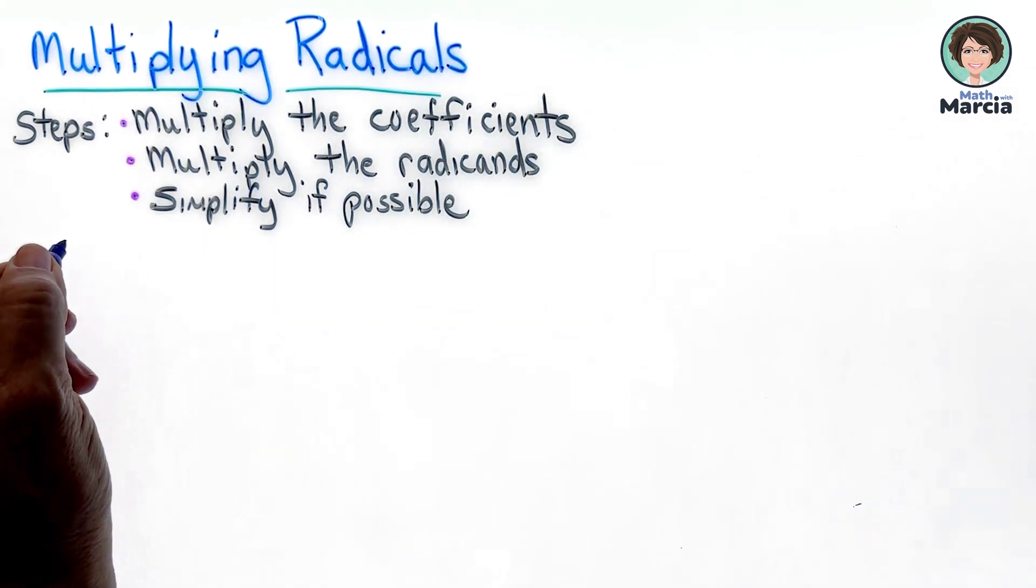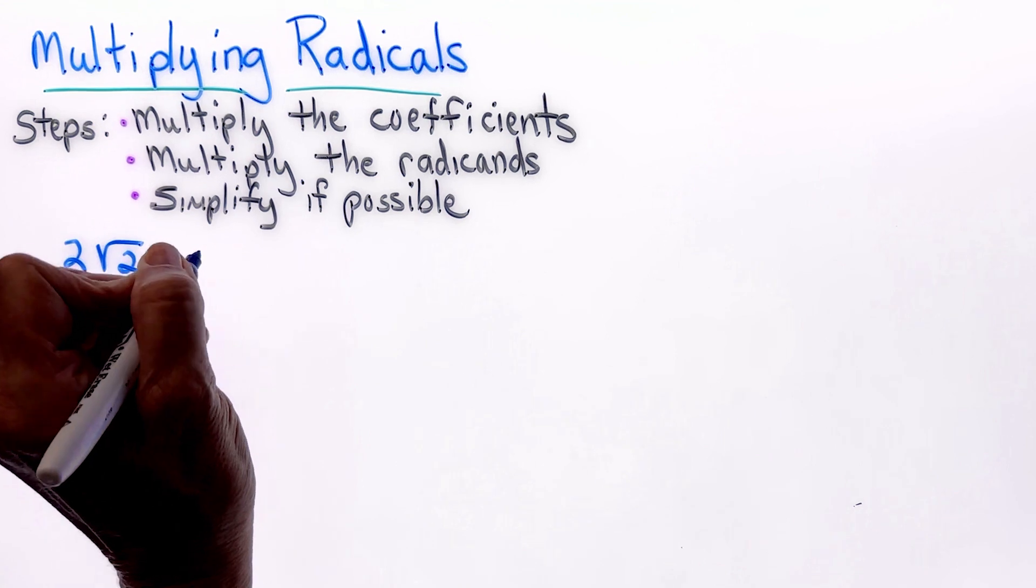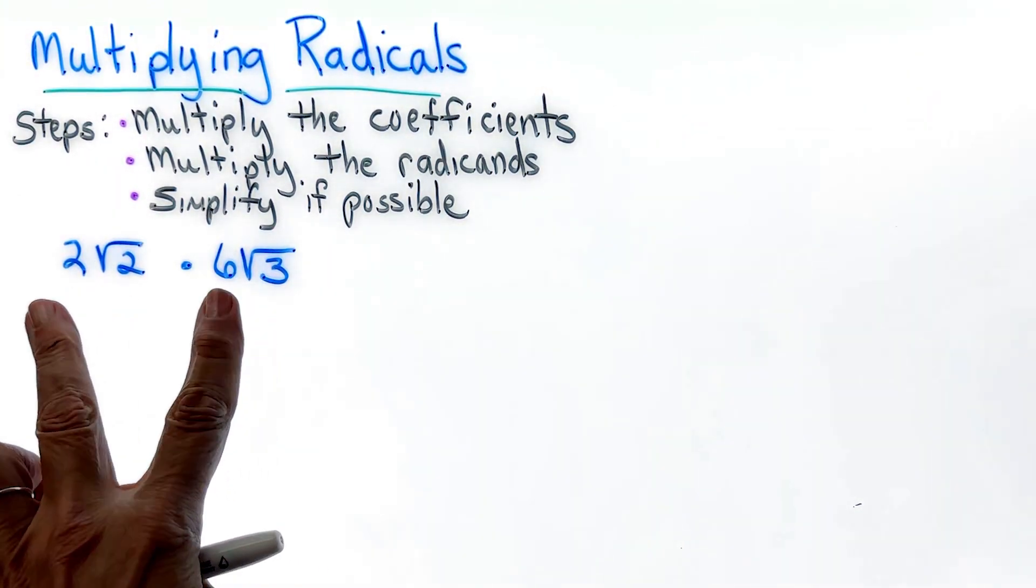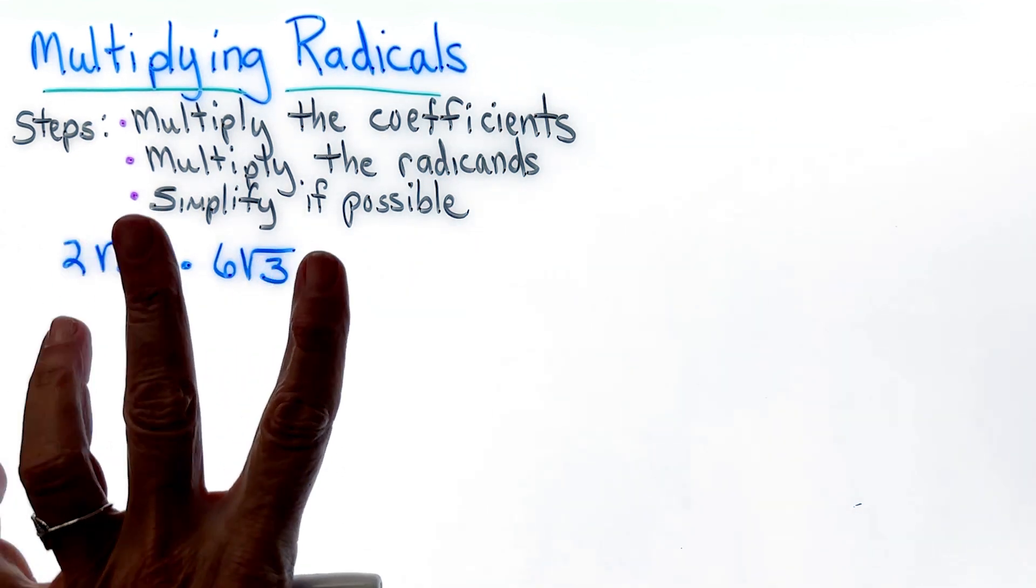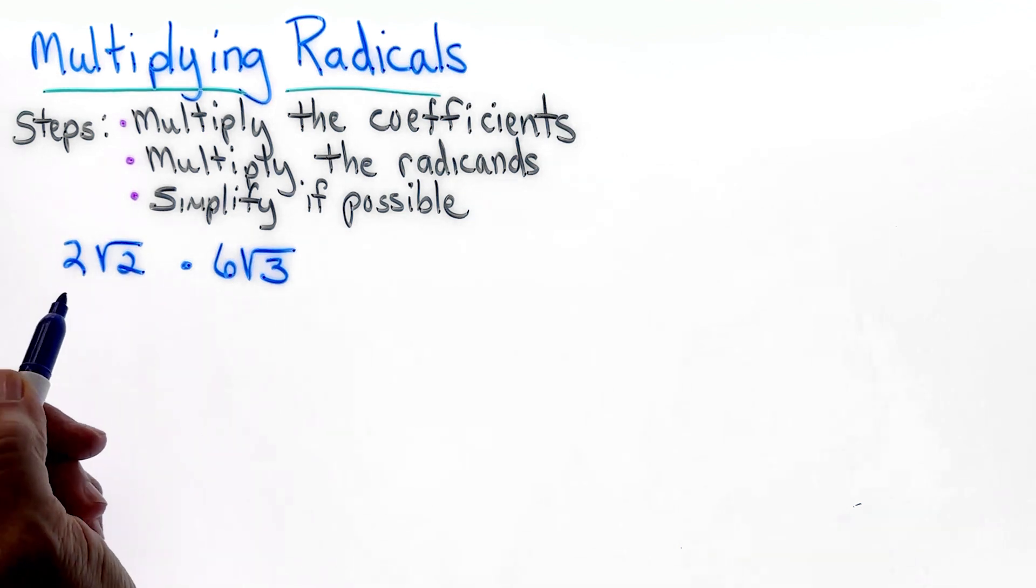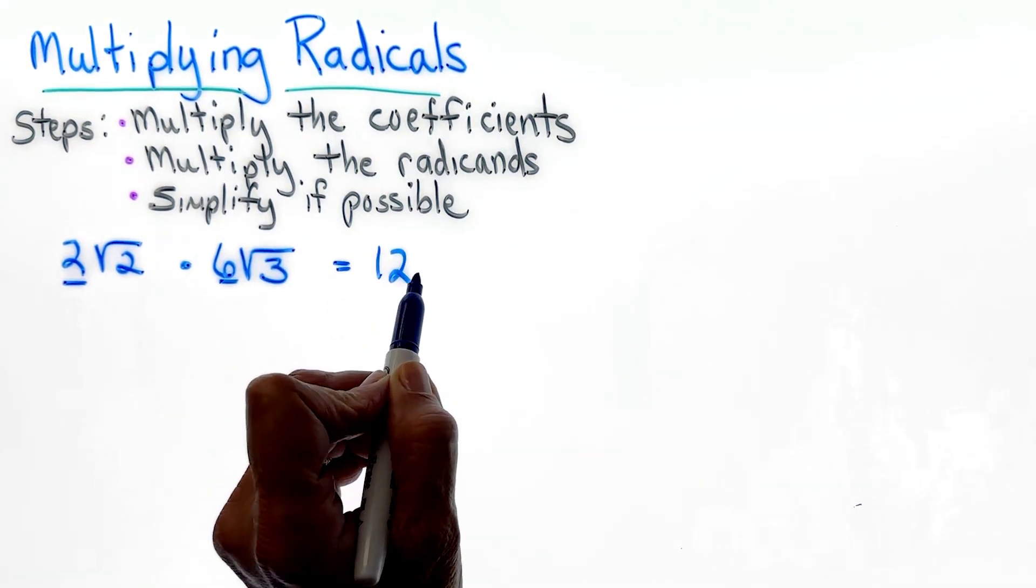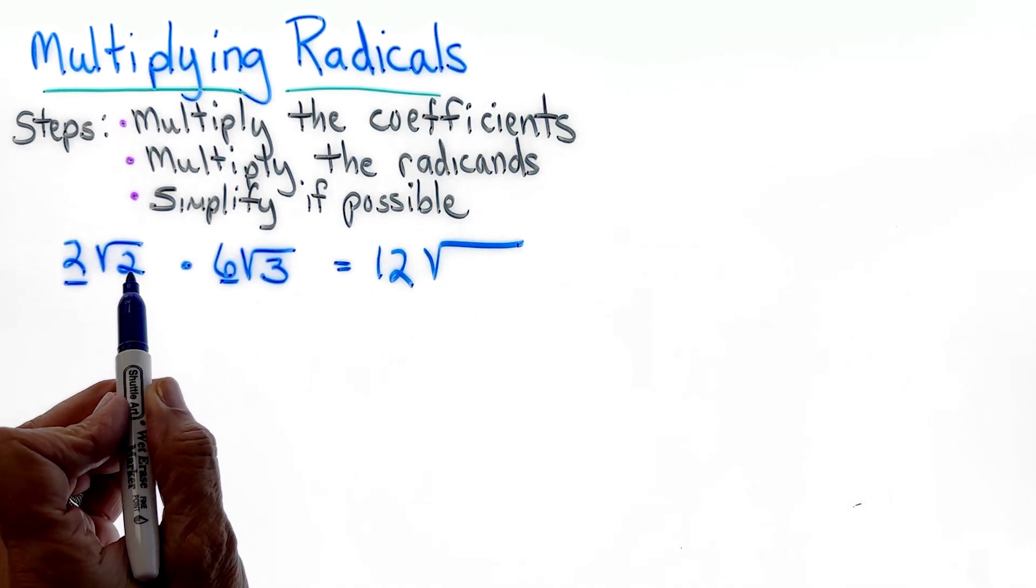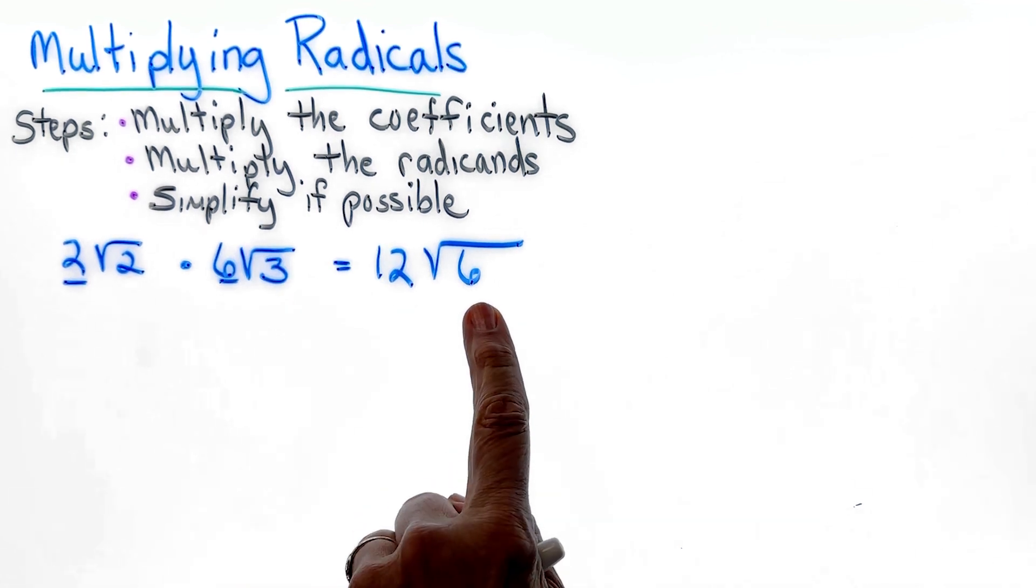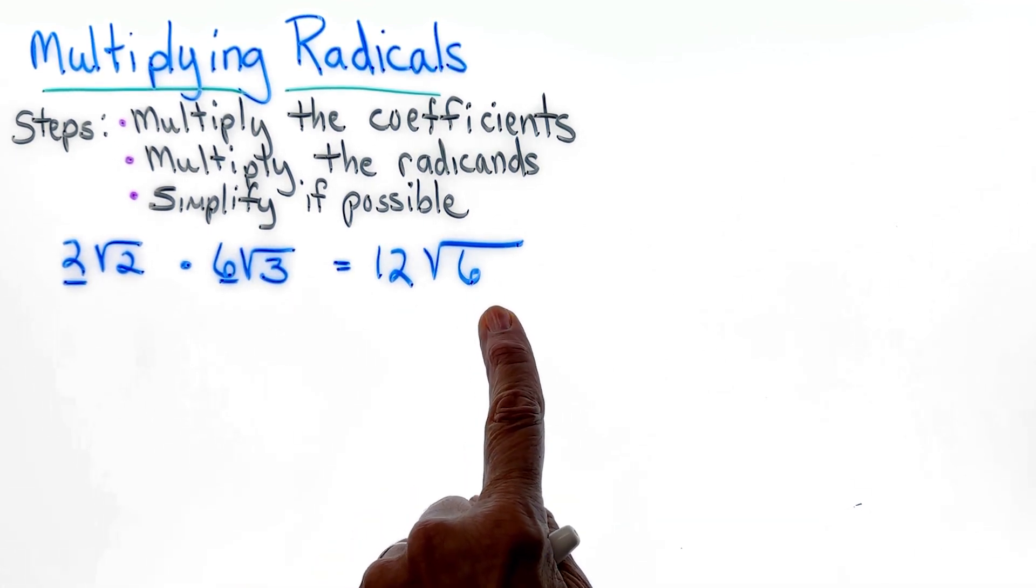So let's start with 2 square roots of 2 times 6 square roots of 3. Coefficients or the radicands do not need to be the same, just like when you're multiplying fractions. So I am going to multiply my 6 by 2 times my 6, which is 12, and then I'm going to multiply inside. 2 times 3 is 6. I double check my answer to see if I can simplify the square root of 6,